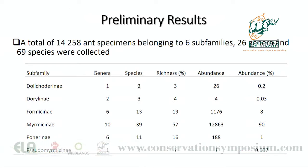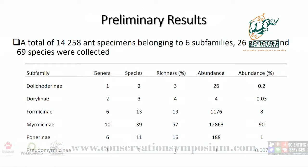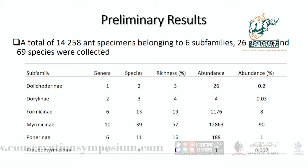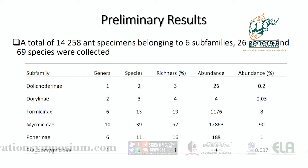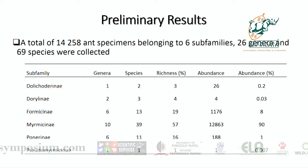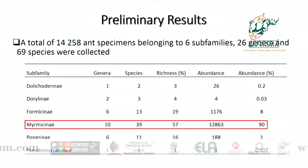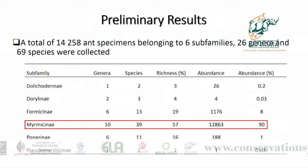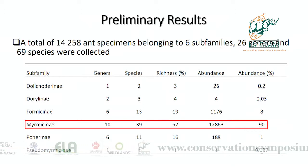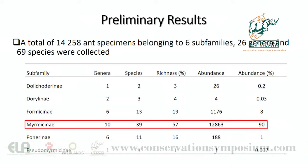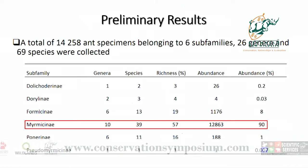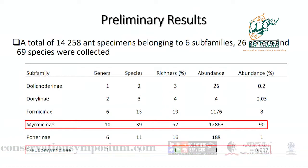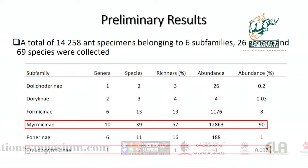For our results, we found approximately 14,000 ant specimens belonging to six sub-families, 26 genera, and 69 species were collected in Buffers Dry. Not surprisingly, we found that Myrmicinae was the most diverse sub-family with 57% richness as well as 90% abundance, followed by Formicinae, which was the second most diverse sub-family. The least diverse sub-family was Pseudomyrmecinae, which had less than 0.1% abundance and only 1% species richness.